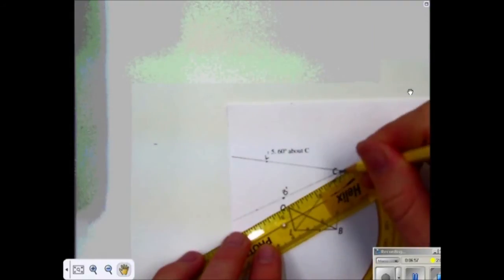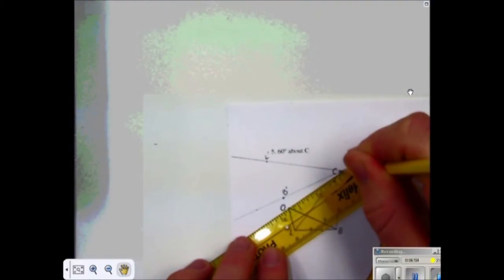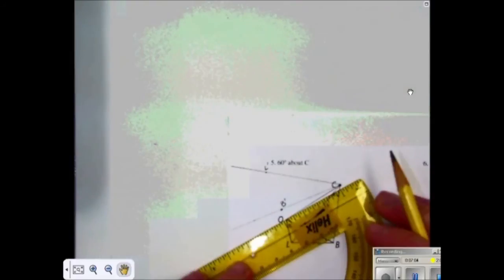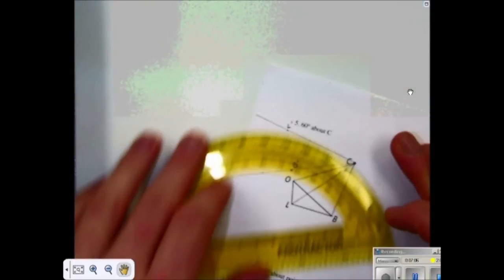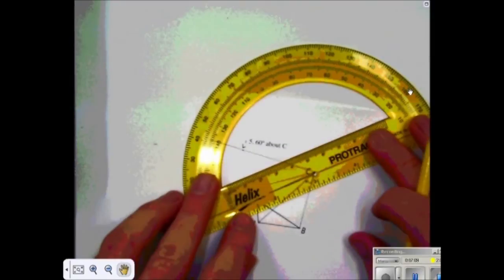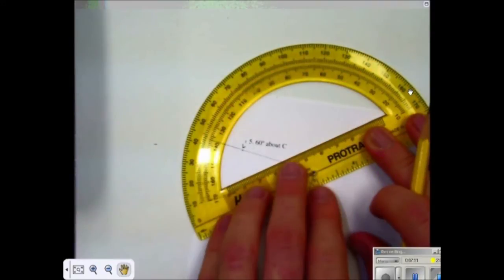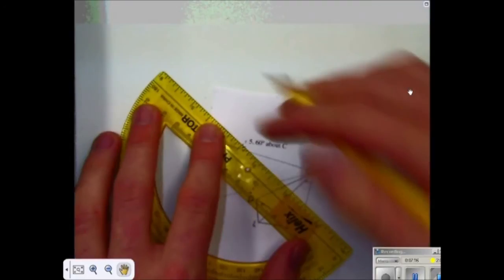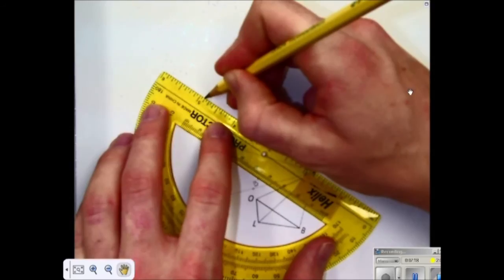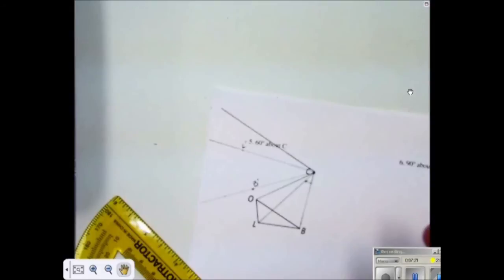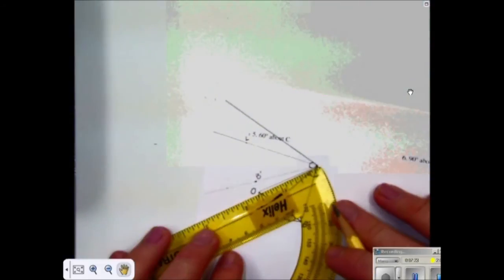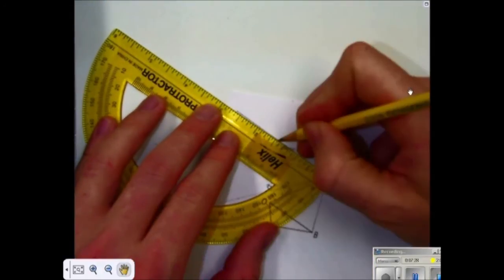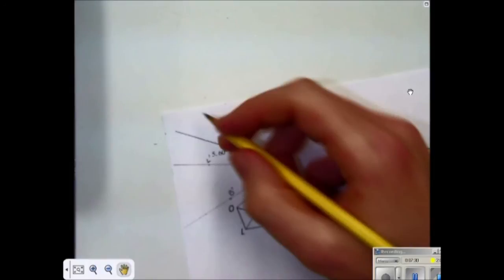The same thing for O. I'm taking each point and rotating it about C, the same angle. So it's 60 degrees. 60 degrees. And the length of CO is about an inch and a half. So this length should also be an inch and a half. And this is O prime.